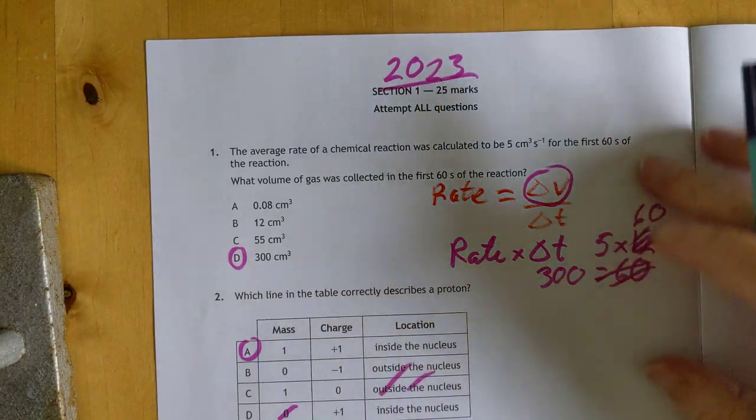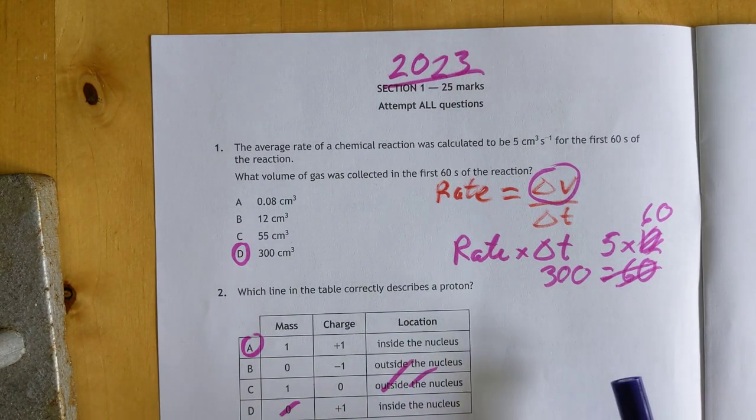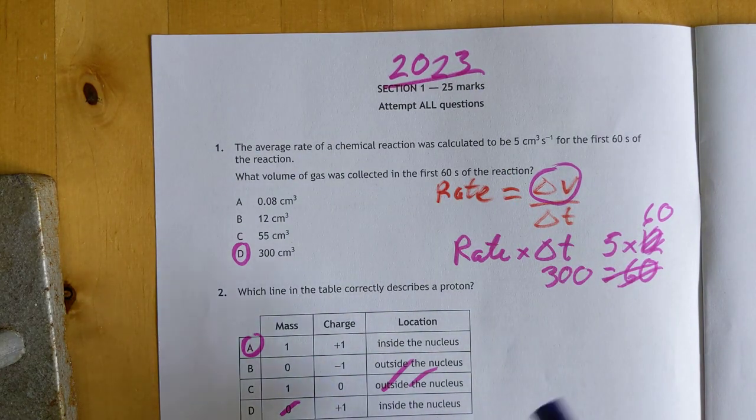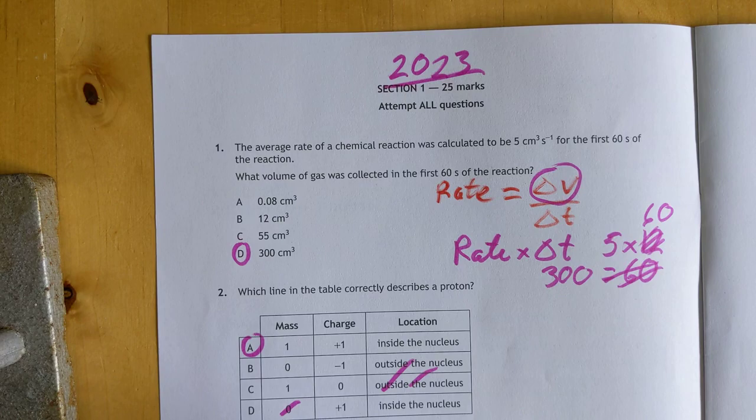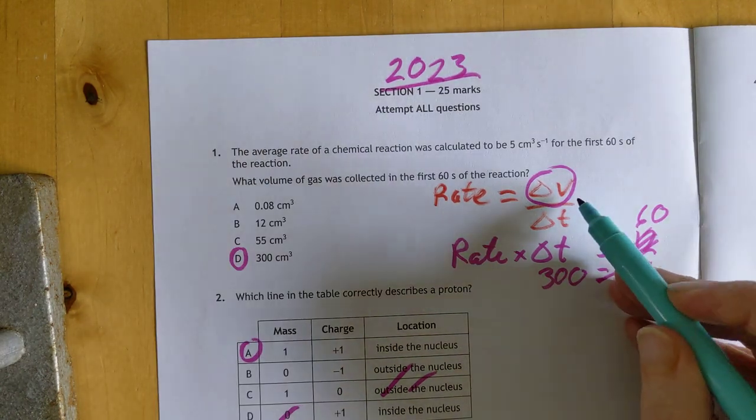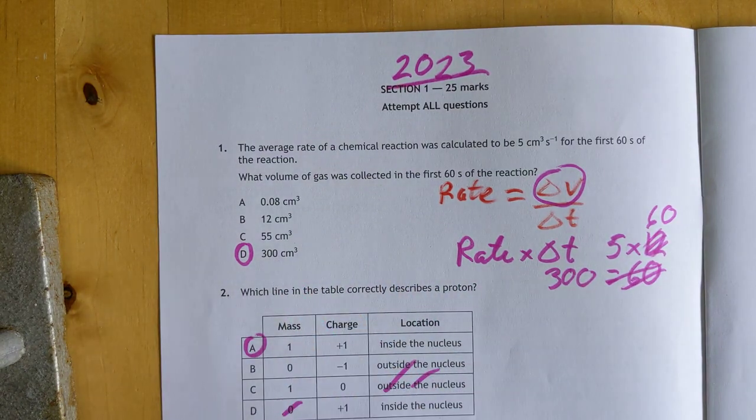It's a quick run through. Question one is about rates. This is National 5 Chemistry by the year 2023. Rate is change in volume over change in time. This time we're solving for the change in volume, so that's equal to the rate times the time period, which is D according to me.